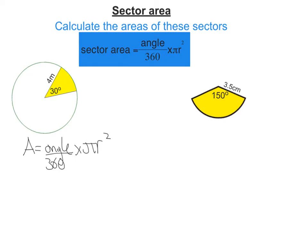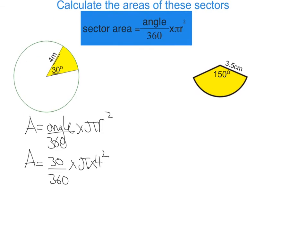Now let's substitute in the values. A equals, I've got an angle of 30 over 360 times pi, and the radius here is 4, so it's 4 squared.